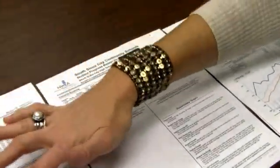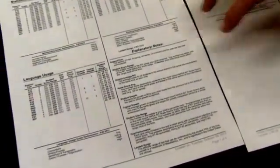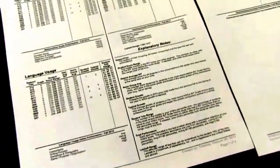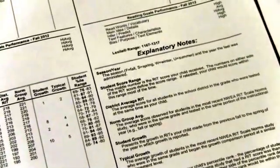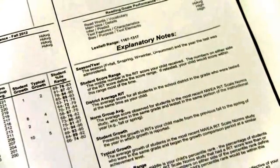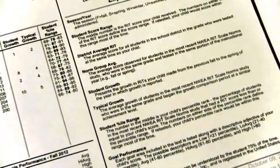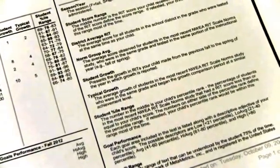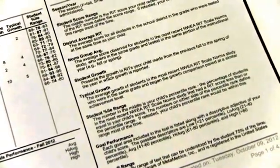There is a nice explanatory notes section on these reports in the lower right. Each note explains the pieces of information on the report. You can show that to parents for their reference later on — if they don't quite remember what a particular number meant, the information is there. It's a good starting point.